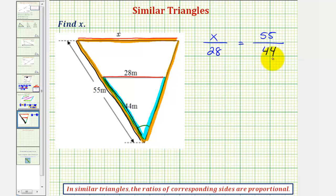Now that we have the proportion, we can cross multiply and solve for x. We would have x times 44 must equal 28 times 55. Well, x times 44 would be 44x equals 28 times 55 is equal to 1540.